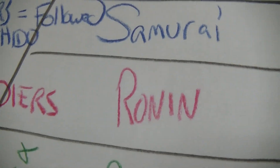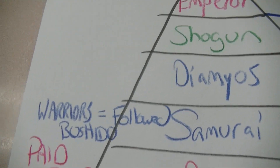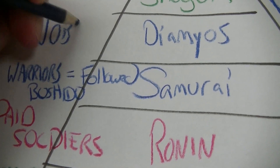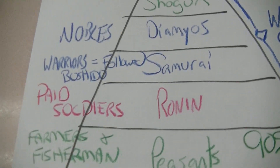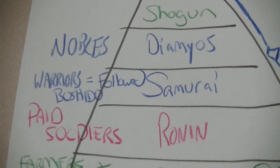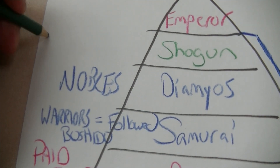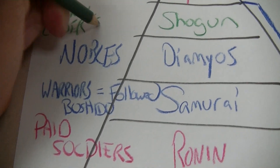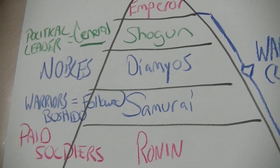The samurai are your best warriors — a lot of times you see them going against ninjas. Then you have the daimyo, your nobles of the warrior class — they're the leaders at the top of that group. They'll spend a lot of time with the shogun. Your shogun is a political leader, but he's also a general.